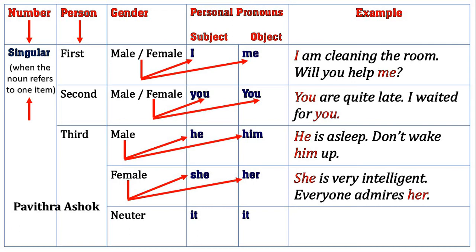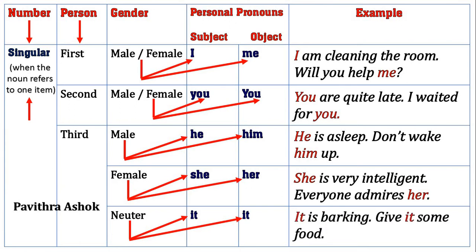Next one is neuter. Neuter is a common gender. Here subject is it, and object is also it. For example: 'It is barking, give it some food.' In the first sentence, 'it' is used in the place of subject of a sentence. In the second sentence, 'it' is used in the place of an object of a sentence.